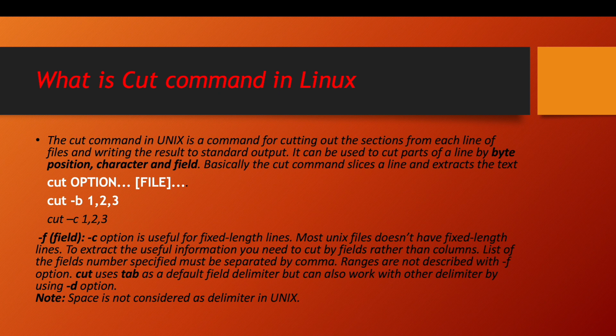The syntax is: cut, its option, and then the file name. Or you can use the cat command to open the file and then use the pipe symbol to redirect it to the cut command. Cut is mainly used for byte-level processing, character-level processing, and field-level processing. The most frequently used one is field-level processing. In this command, a field means column — to work with different columns you use the hyphen-f option.